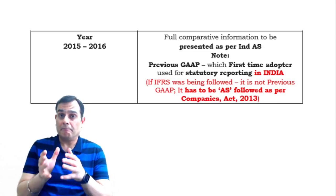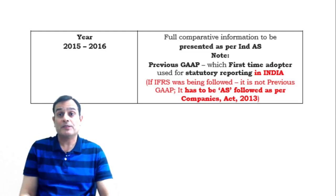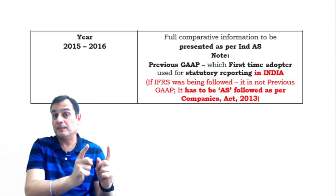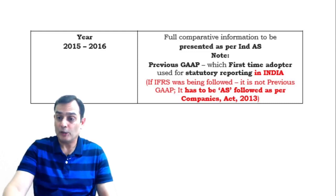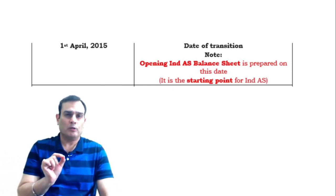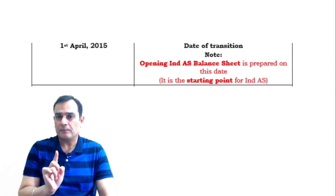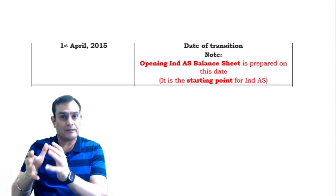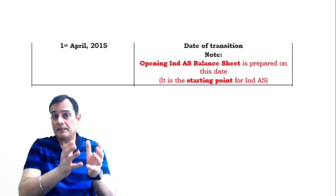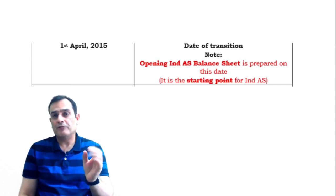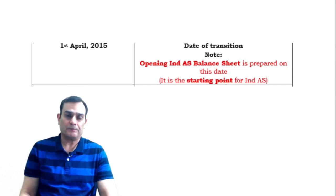In this case, the comparative which is 15-16 also needs to be presented as per IndAS. So the company will present the financials for 16-17 as per IndAS and also present the comparatives for 15-16 — which were already presented on the basis of previous GAAP — now converted into IndAS. Not only this, the company also needs to present, at the beginning of the previous year — that is 1st April 2015 — not a complete set of financial statements, but just one balance sheet. So for 16-17, you'll present a complete set of financial statements: a balance sheet, income statement, cash flow statement, and notes to accounts. The same is done for 15-16.